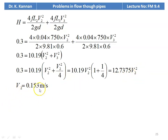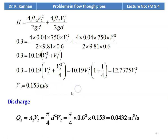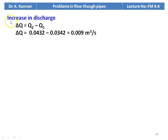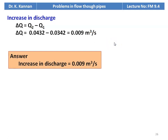Solving this equation, V2 = 0.153 meters per second. The discharge Q2 = A2 × V2 = π/4 × 0.6² × 0.153 = 0.0432 meter cube per second. The increase in discharge: ΔQ = Q2 − Q1 = 0.0432 − 0.0342 = 0.009 meter cube per second. When the parallel pipe is added, the discharge increases by 0.009 meter cube per second.